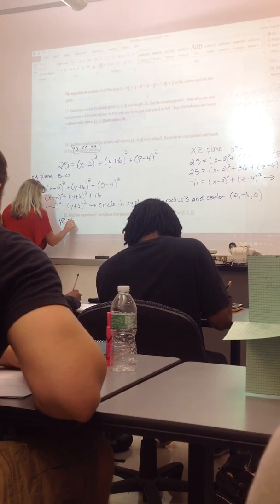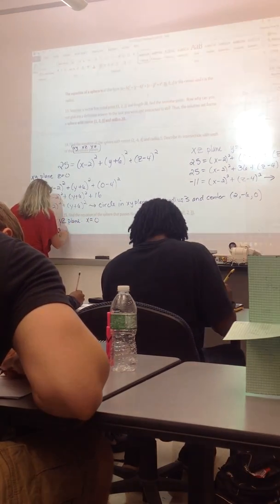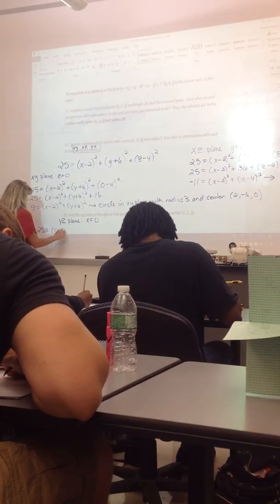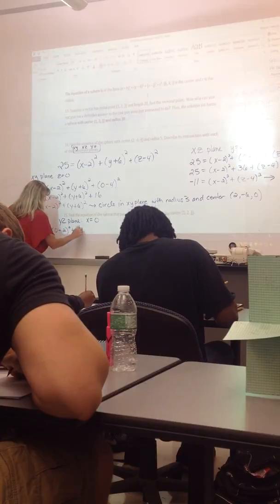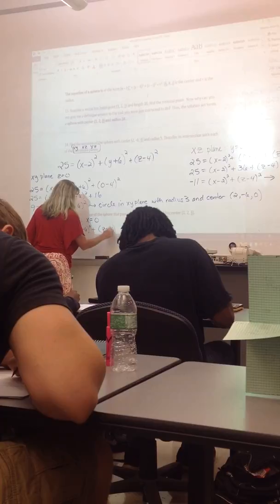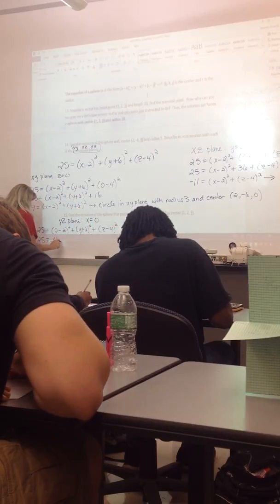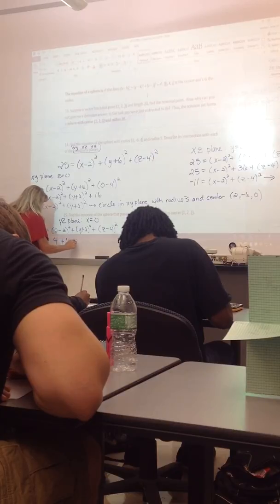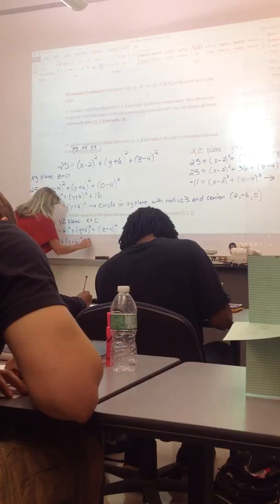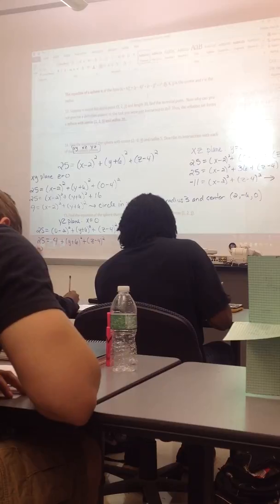All right, then for the yz plane, x has to be 0. And so we would get 25 equals 0 minus 2 squared plus y plus 6 squared plus z minus 4 squared. So 25 would equal 4 plus y plus 6 squared plus z minus 4 squared. And 25 minus 4 is 21.